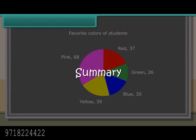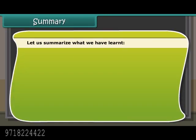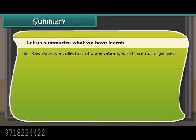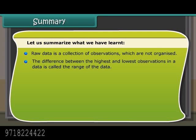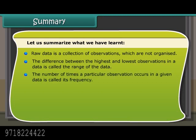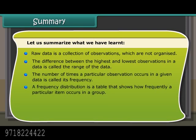Summary: Let us summarize what we have learned. Raw data is a collection of observations which are not organized. The difference between the highest and lowest observations in a data is called the range of the data. The number of times a particular observation occurs in a given data is called its frequency. A frequency distribution is a table that shows how frequently a particular item occurs in a group.